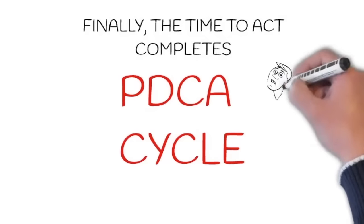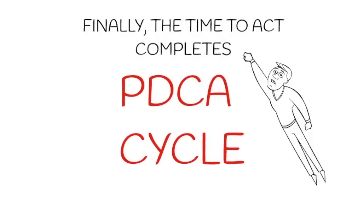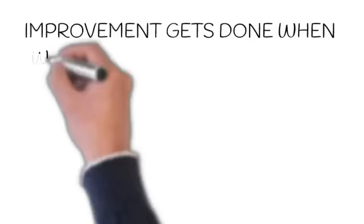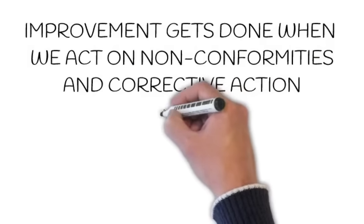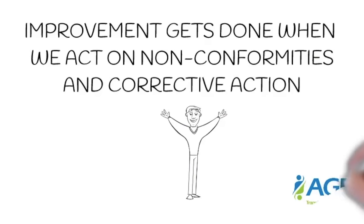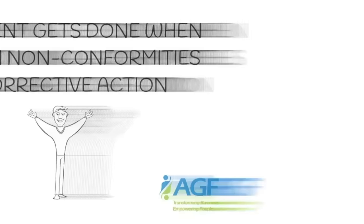And finally, the time to act closes the PDCA cycle. Improvements get done when we act on non-conformities and corrective action. This is how we truly achieve continual improvement. So there you go, this is ISO 9001:2015 in a nutshell and how it all works within the plan-do-check-act cycle.